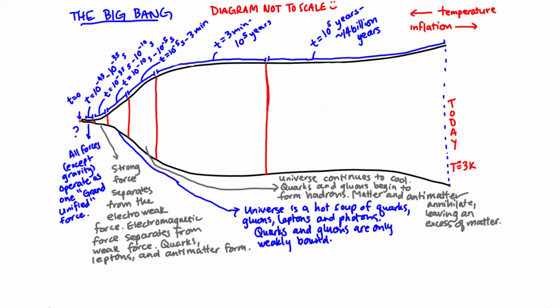From 3 minutes to 10 to the 5 years, nucleosynthesis began. This is the process where protons and neutrons joined to form atomic nuclei. The lightest nuclei, deuterons, isotopes of helium and lithium, were formed.